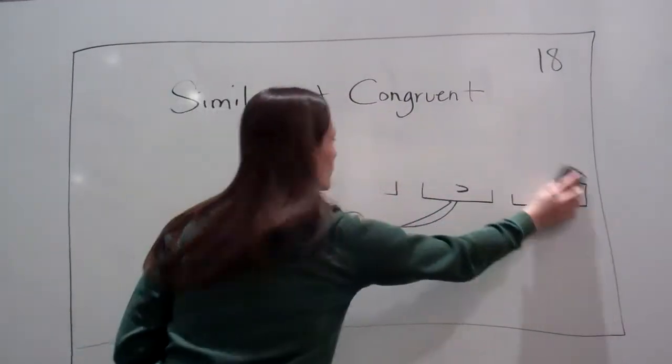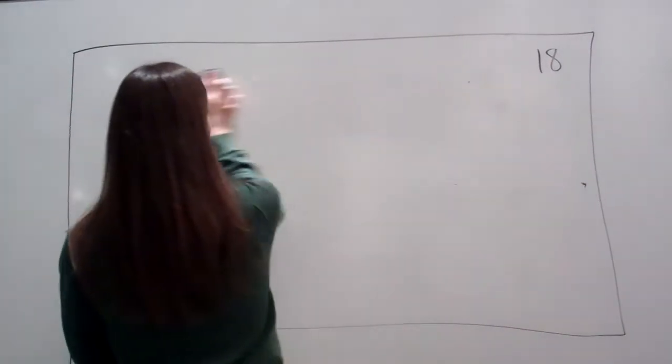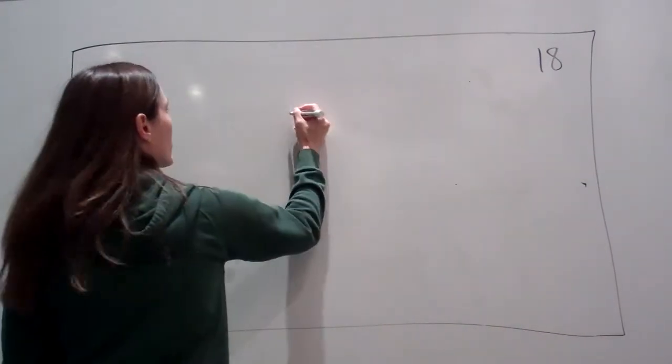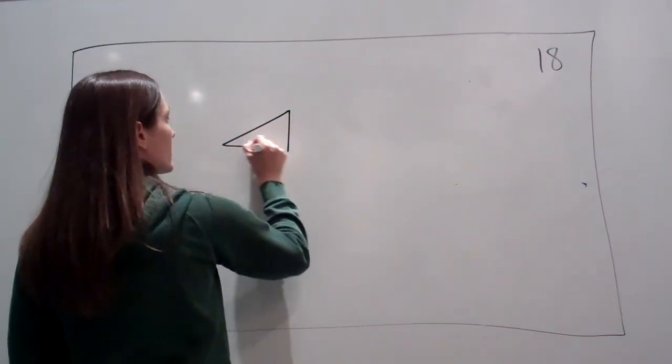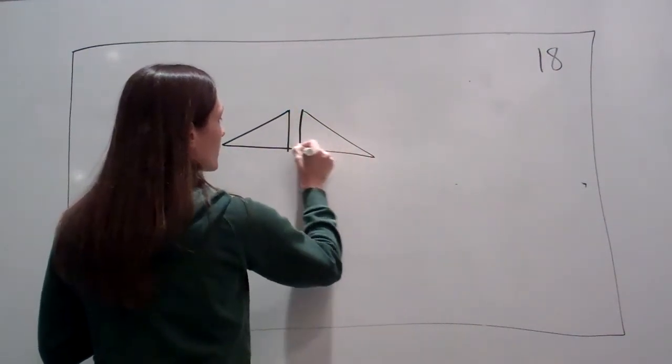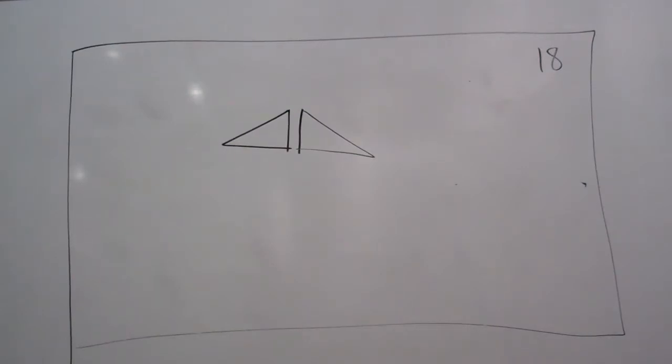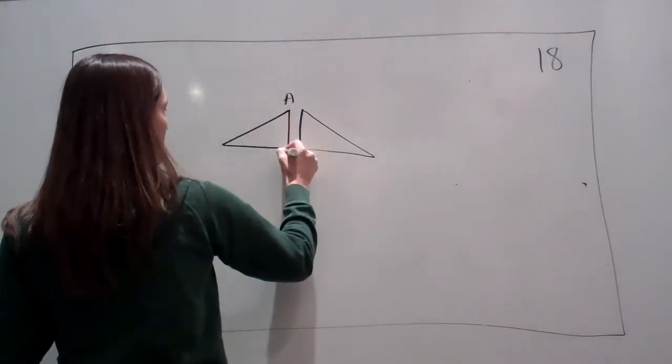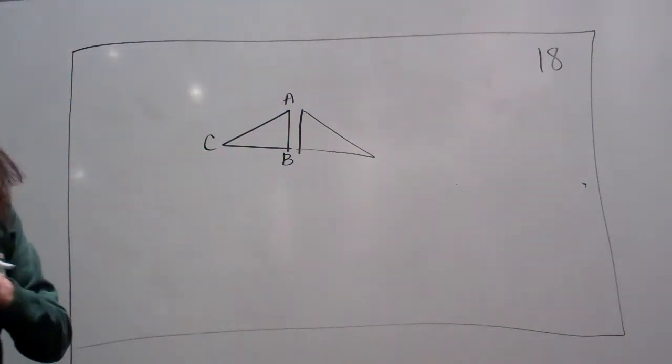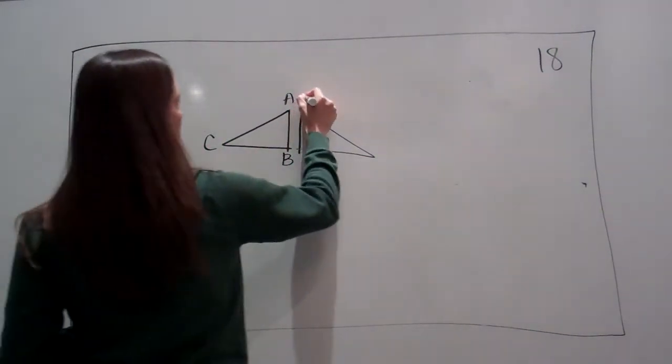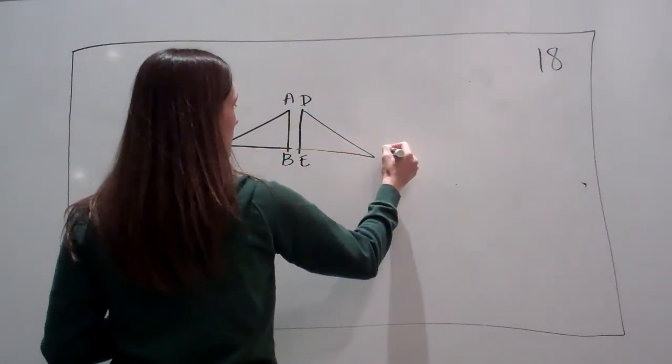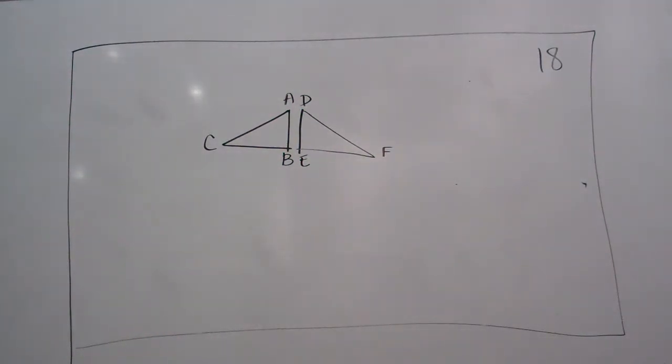All right. Draw two triangles on your paper. One like this, and one like this. Okay. And then label it as I do. Okay.